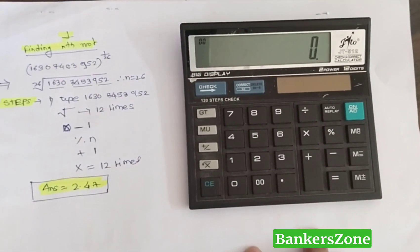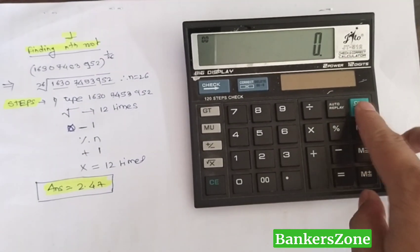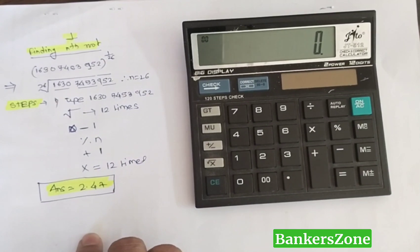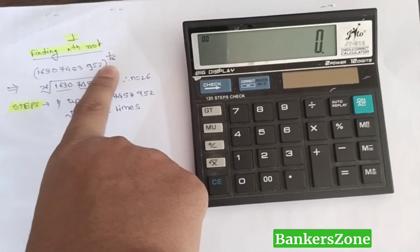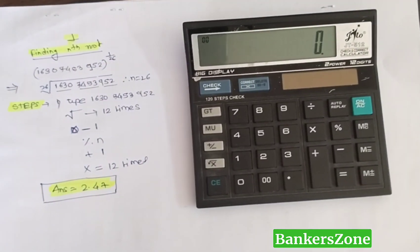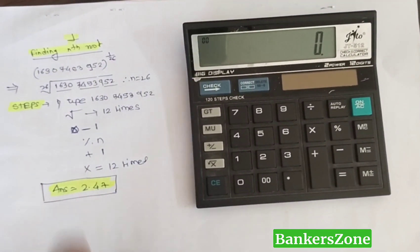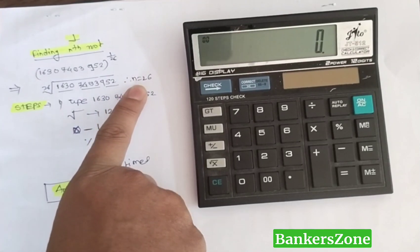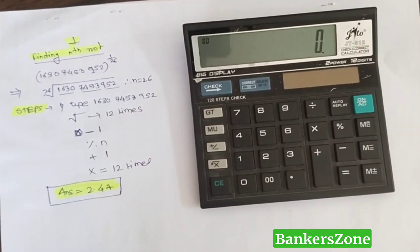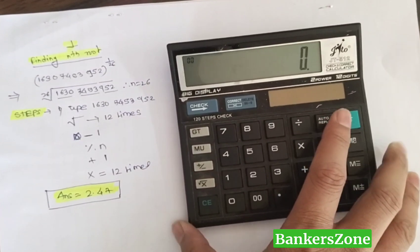We'll discuss how to calculate the nth root. I am calculating the nth root of a big number - specifically the 26th root. This means 1 upon 26, so here n will be 26 and we have to find this root.